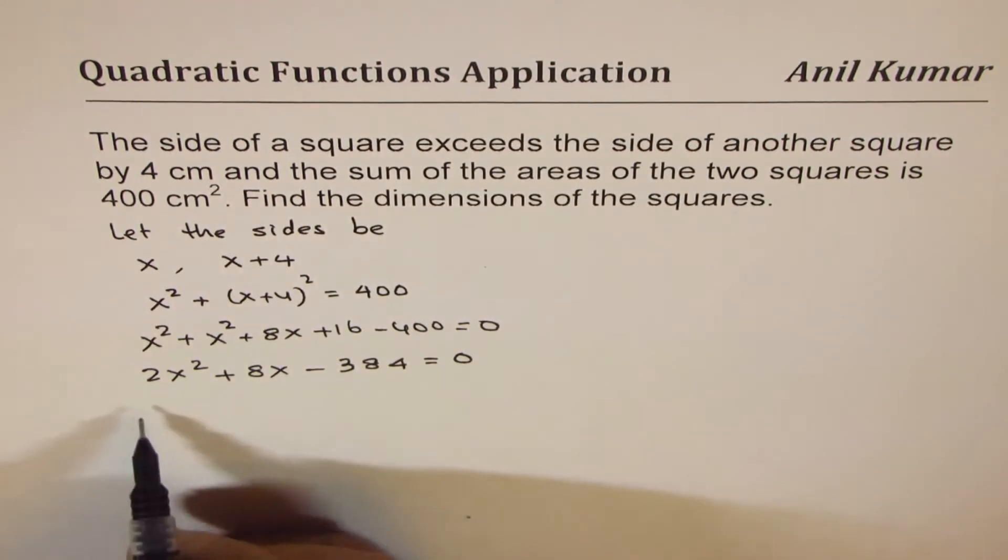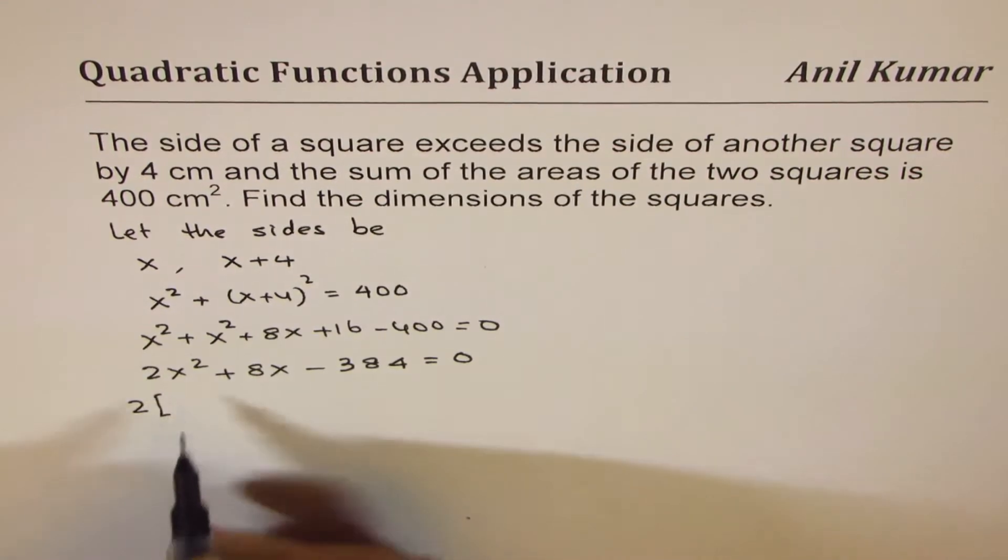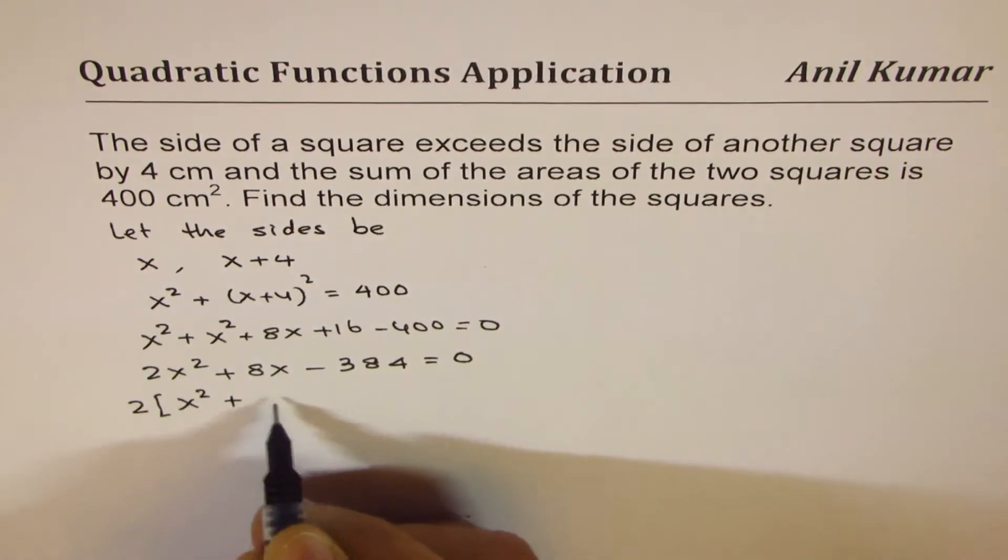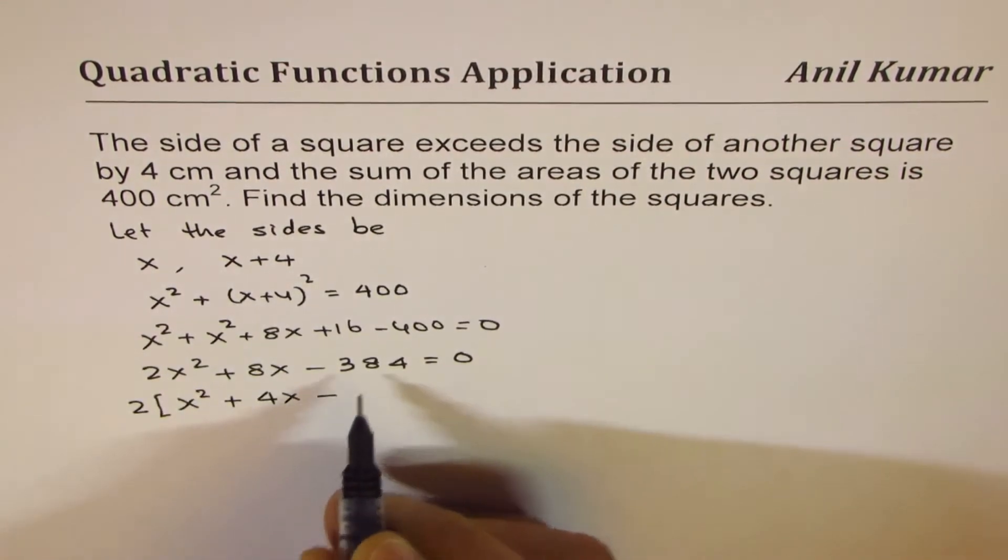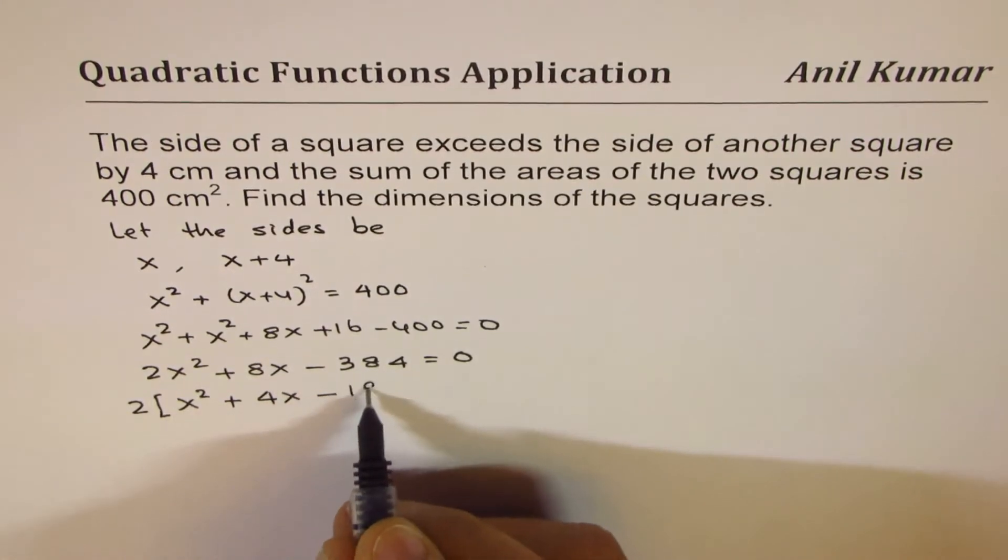To simplify, we can factor out 2. So if you factor out 2, you get x² + 4x, and half of this is 192.